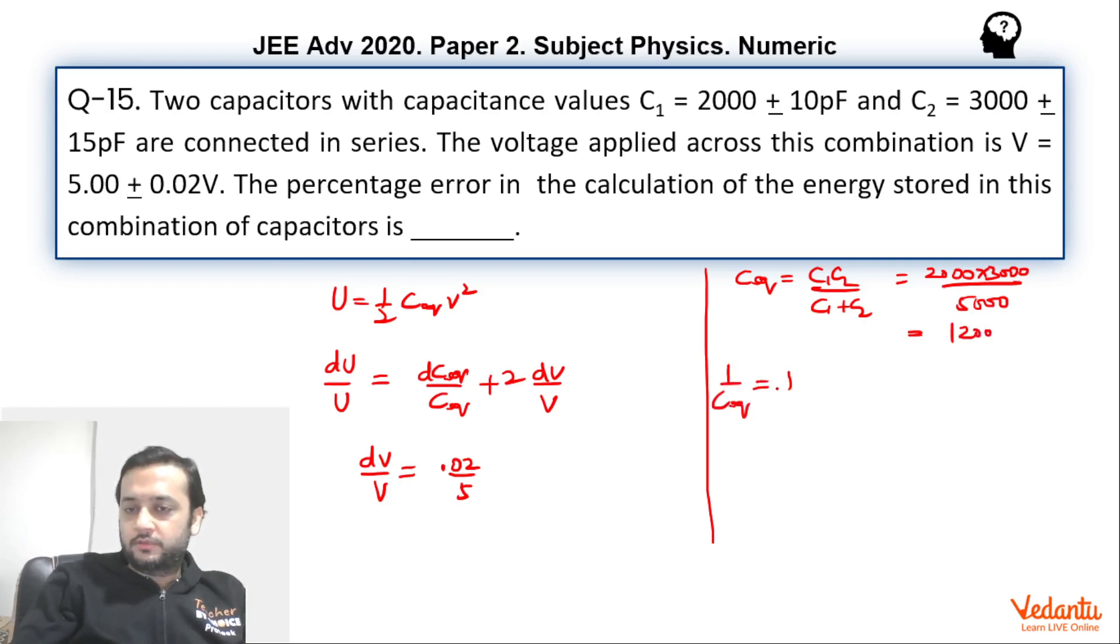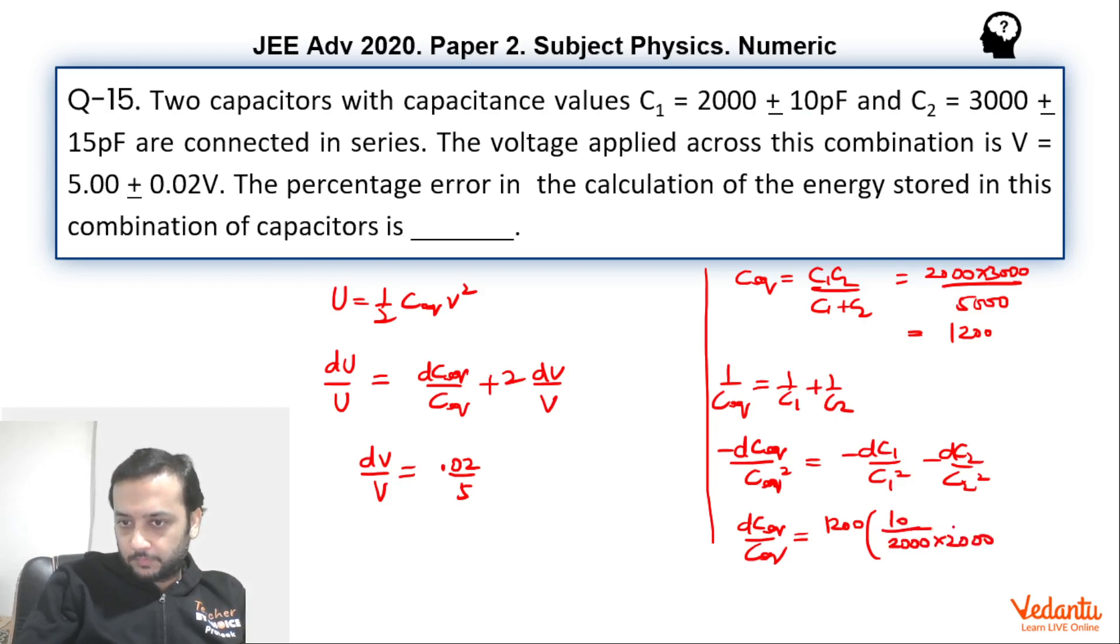Now 1 upon C equivalent equals 1 upon C1 plus 1 upon C2. So how do we differentiate this again? Minus dC_equivalent upon C_equivalent square equals minus dC1 upon C1 square minus dC2 upon C2 square. We have to find the value of dC_equivalent by C_equivalent. So we can take this C equivalent on this side. So it was 1200 into dC1 by C1 square. dC1 is 10 upon C1 square is 2000 square, plus dC2 is 15 divided by 3000 square.